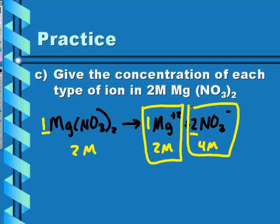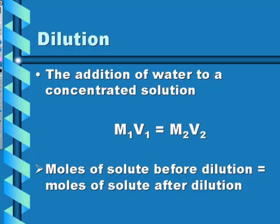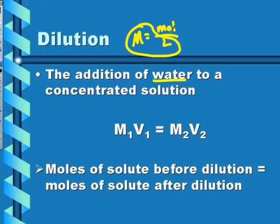That's all the question is asking — do you know that you should have twice the amount of nitrate as the starting molarity of magnesium nitrate. With solutions, we also need to dilute them many times. Dilution is the addition of water to a concentrated solution, which lowers the concentration. The formula we use is M1V1 = M2V2. When molarity is multiplied by volume you get moles, so moles before dilution equal moles after dilution. It's more dilute because there are more water particles between the solute particles.